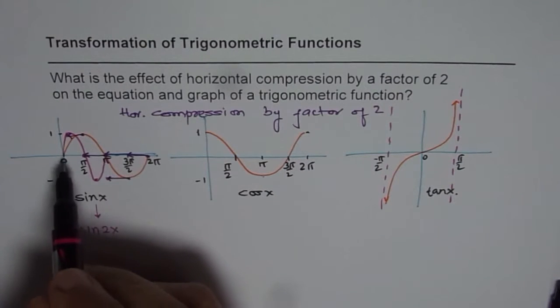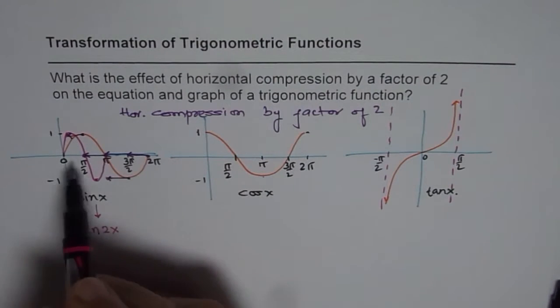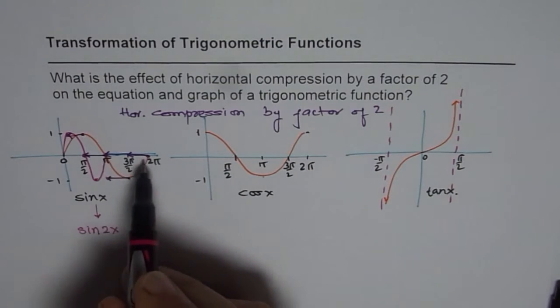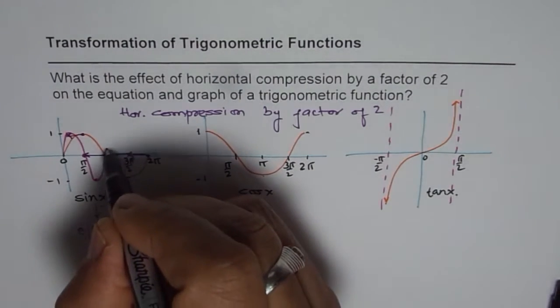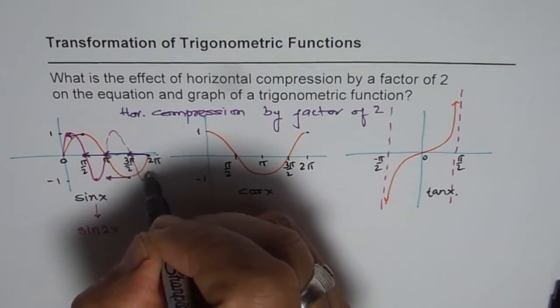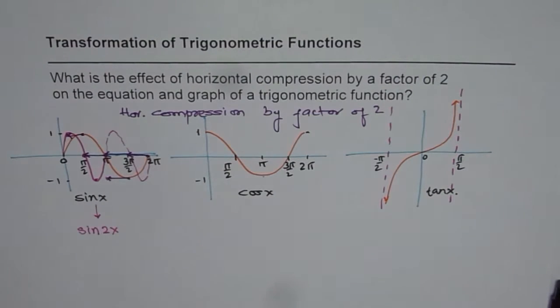So the original function, we had one wave in 2 pi. Now we have one wave in pi. In 2 pi there will be two waves. If I have to draw, I will draw another wave here. So in 2 pi, there are going to be two waves.